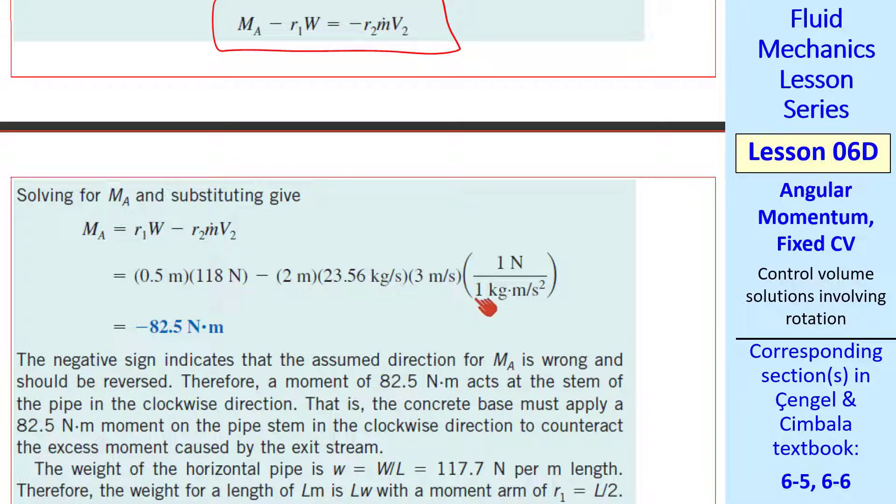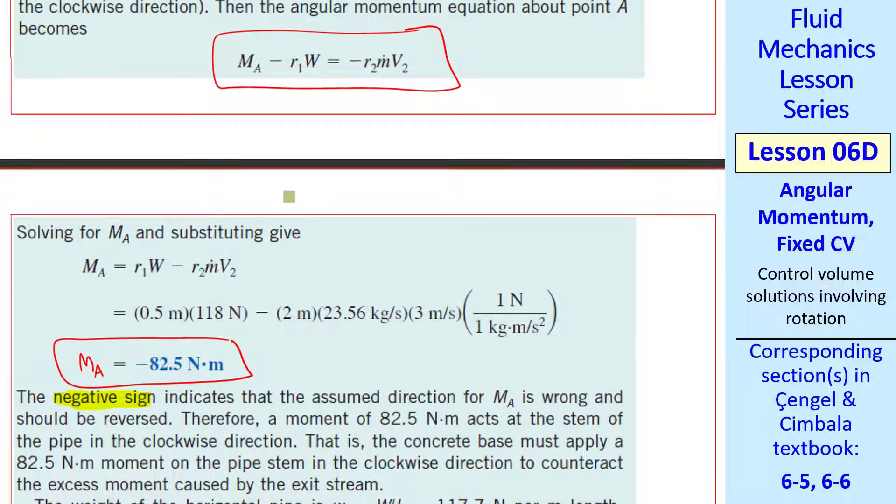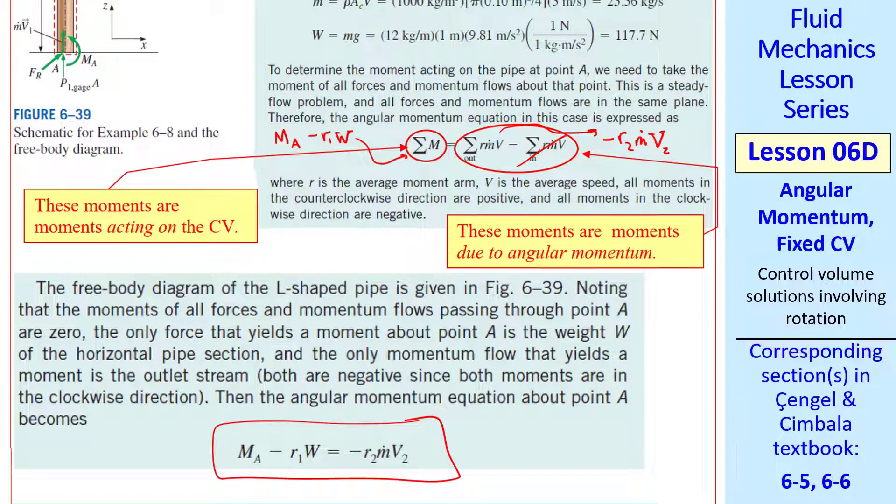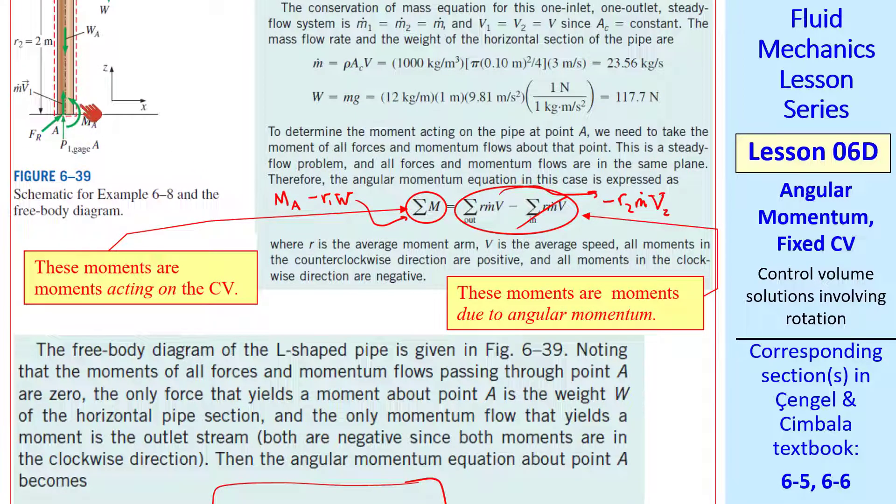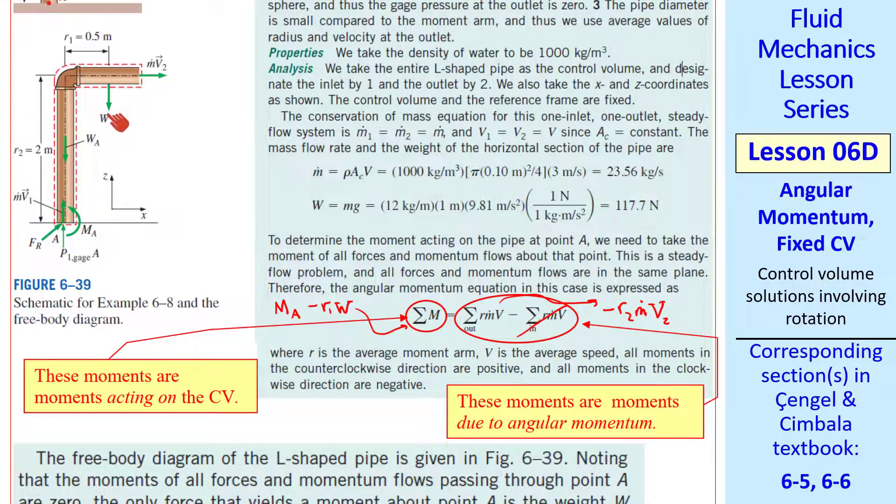Notice that it's negative, which means our assumed direction for moment MA, which was counterclockwise or positive mathematically, was incorrect. The actual moment is clockwise, implying that in the tug of war between this weight causing a clockwise moment and this jet causing a counterclockwise moment on the pipe, the jet wins.